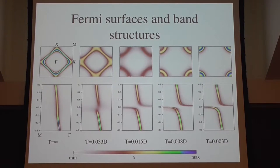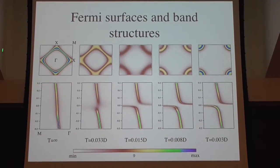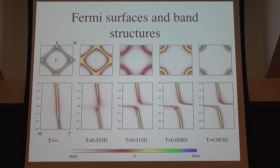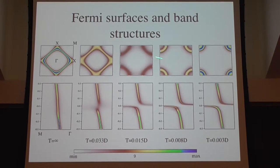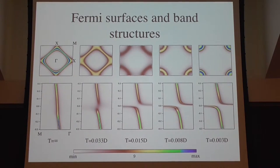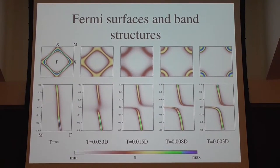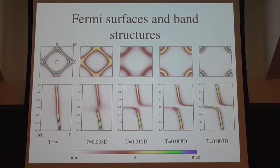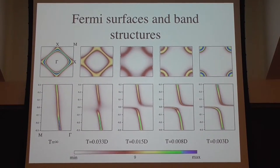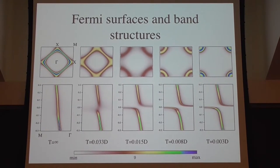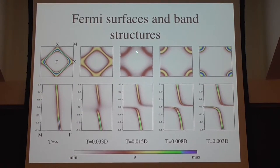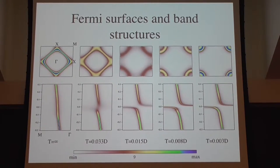If you look at the Fermi surfaces, starting from high temperature with a small Fermi surface, you can observe a continuous transition from the small Fermi surface to the large Fermi surface. You can also see this in the band structure. There exist two temperature scales: one is the energy scale of the increase of the Fermi surface area itself, and at a lower temperature scale, the Fermi surface tends to become more coherent rather than the area increasing.